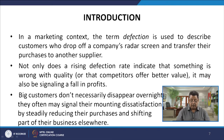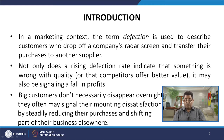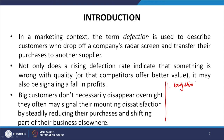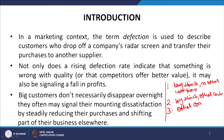In a marketing context, the term defection describes customers who drop off a company's radar screen and transfer their purchases to another supplier. There are three situations: a customer buys from this company only, buys from this company and other companies, or buys from other companies only. Defection means the customer has shifted and is buying from somebody else.